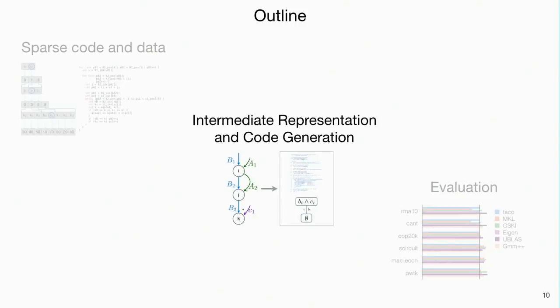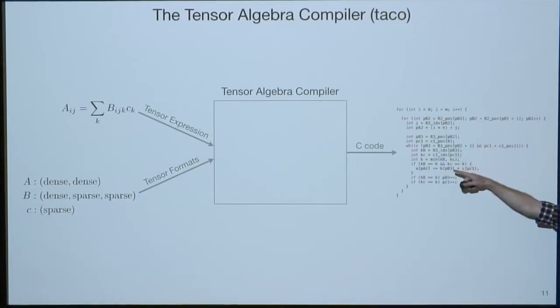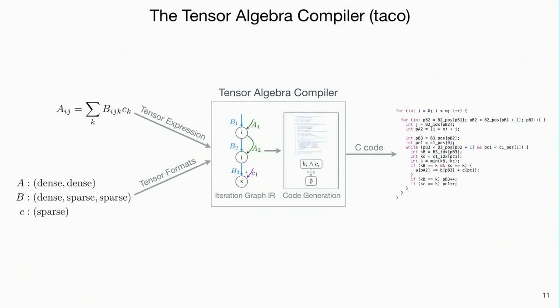Now I'll go into intermediate representation and code generation — this is our TACO compiler. It takes in a tensor expression with any number of operands, and for each operand you specify the format. It produces C code: a kernel that computes that expression on those formats. Internally it converts your expression into an iteration graph, then produces code using a concept we call a merge lattice — a new concept we developed to deal with arbitrary merges of two, three, four, or any number of operands.